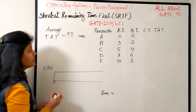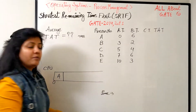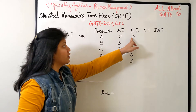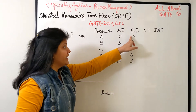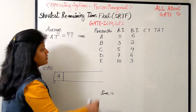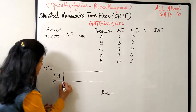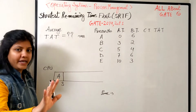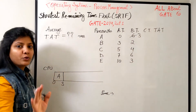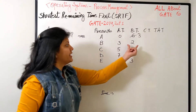On the Gantt chart at time zero, process A starts. Every time keep checking: by the time the next process arrives, if A hasn't finished, is its remaining time smaller than the new process? Before time three no other process is coming, so from zero to three we simply run A. By time three, A has run three bursts, so it now needs three more.